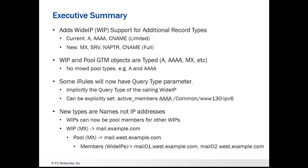In this new version, wide IPs and pool GTM objects are typed based on what queries they are going to respond to. Some iRules, since we've added a query type, iRules need to know what particular type of object you're talking about, because some objects may have the same name and be different types. So iRules will now have a query parameter.